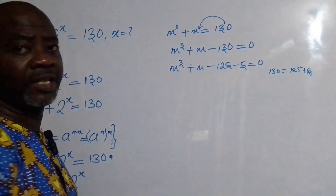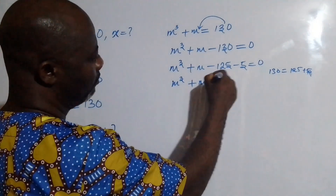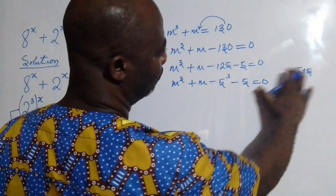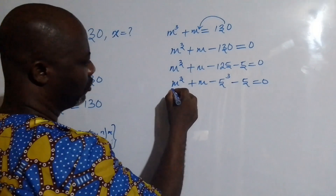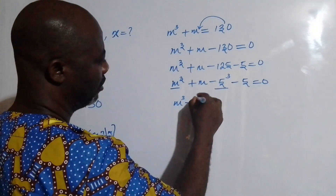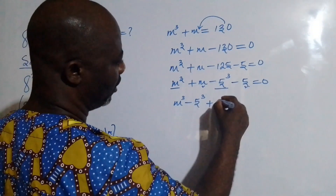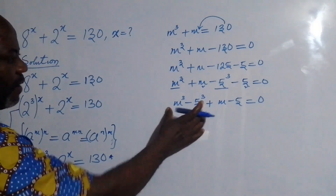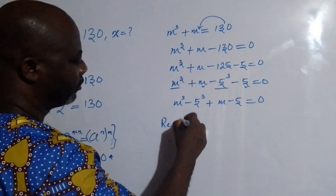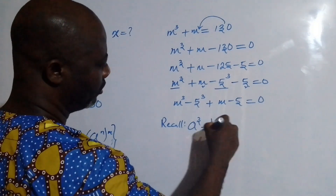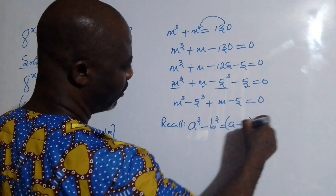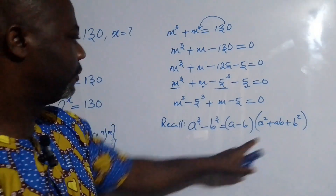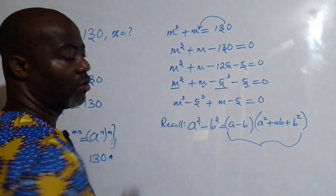What I do now is bring m cubed and minus 125 together as m cubed minus 5 cubed, making this a difference of two perfect cubes. Recall in algebra that a cubed minus b cubed is the same as a minus b, multiplied by a squared plus ab plus b squared. I am going to apply this expression to this difference of two cubes.